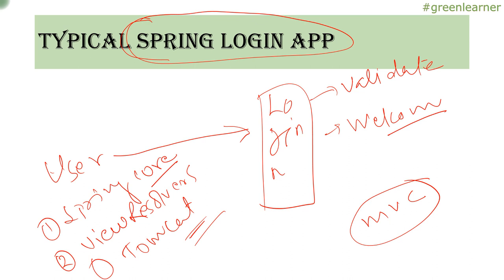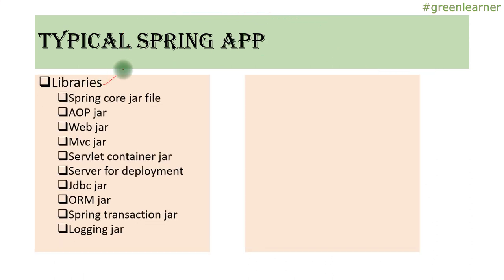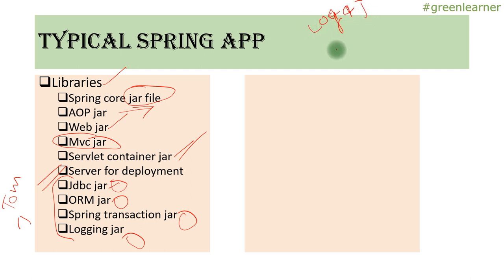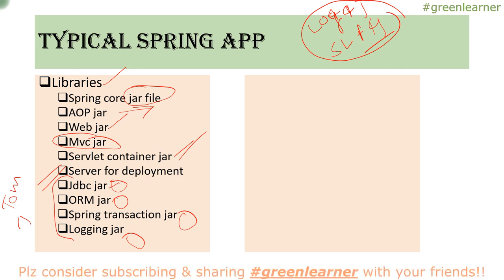If I go into detail about what you need: for libraries, you need the Spring core jar, AOP jars for aspect-oriented things, web jar, MVC jar, a servlet container, and a server for deployment. That server can be Tomcat, Jetty, JBoss, or anything. If you want to interact with the database, you need JDBC jars and ORM jars. If you are managing transactions, you need the transaction jar. For debugging, you need logging — log4J, SLF4J — and you need to create instances and put them into context so the container picks them up when starting.